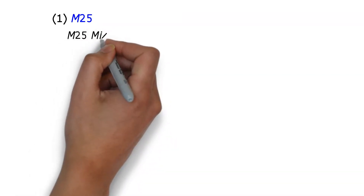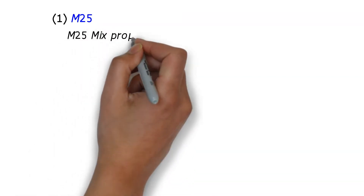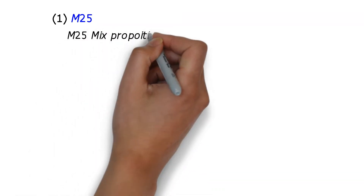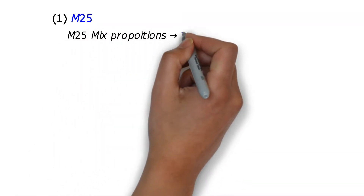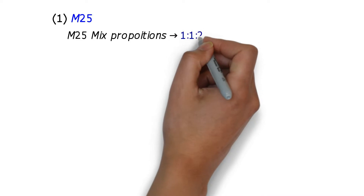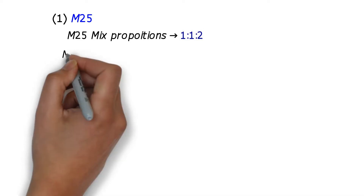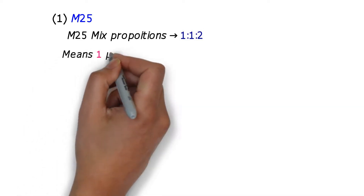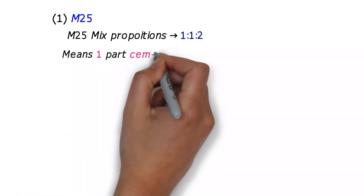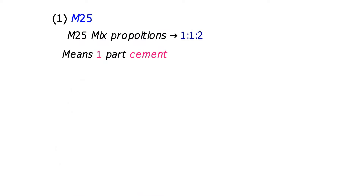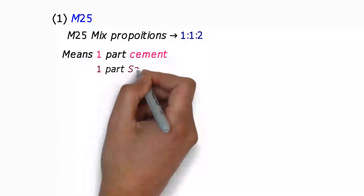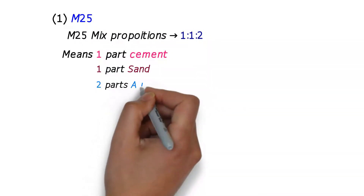We are calculating for M25 grade concrete. The mix proportion for M25 grade concrete is 1:1:2, meaning one part of cement, one part of sand, and two parts of aggregate.